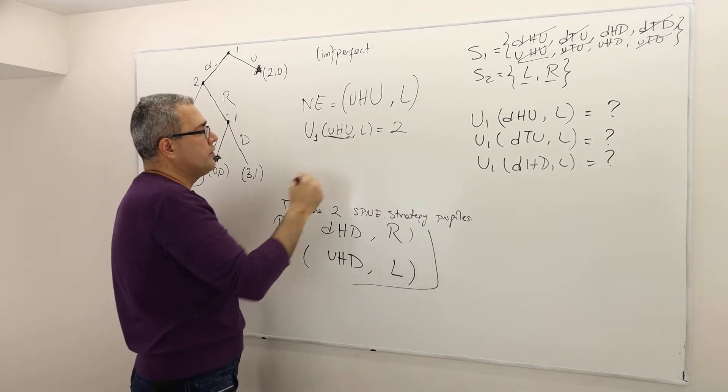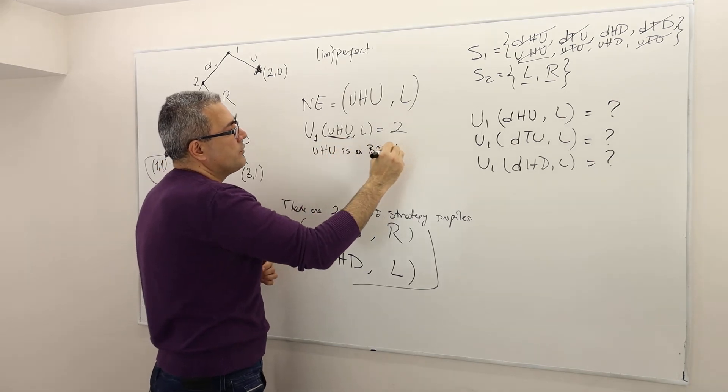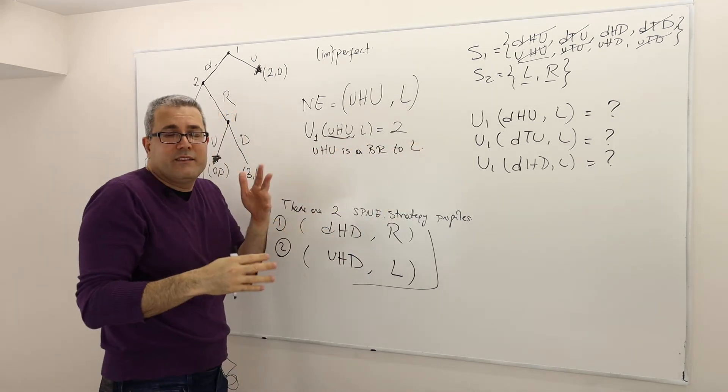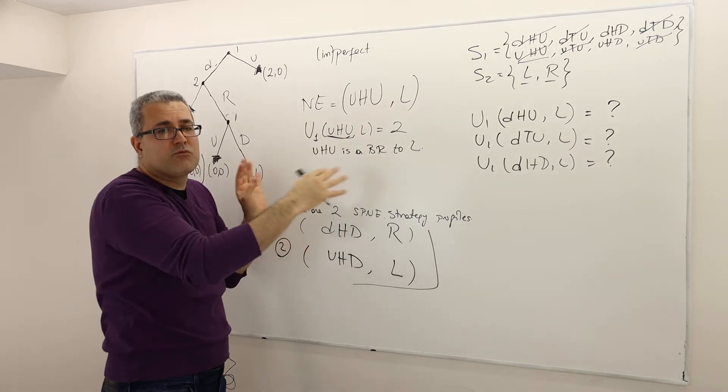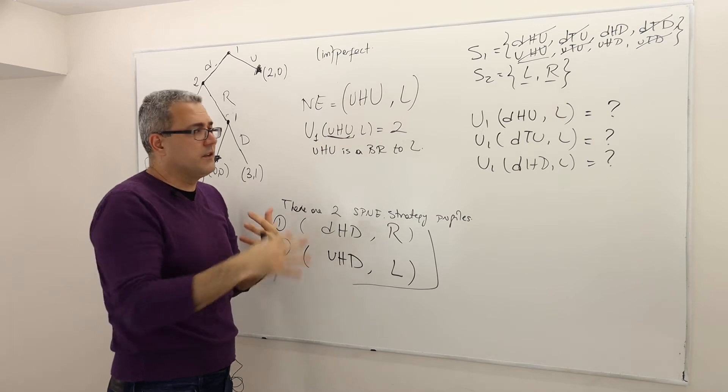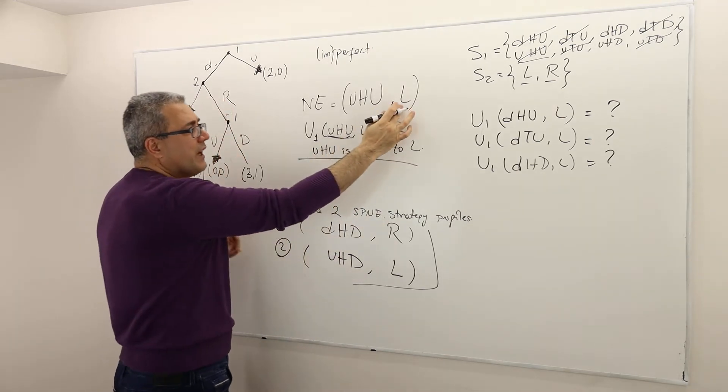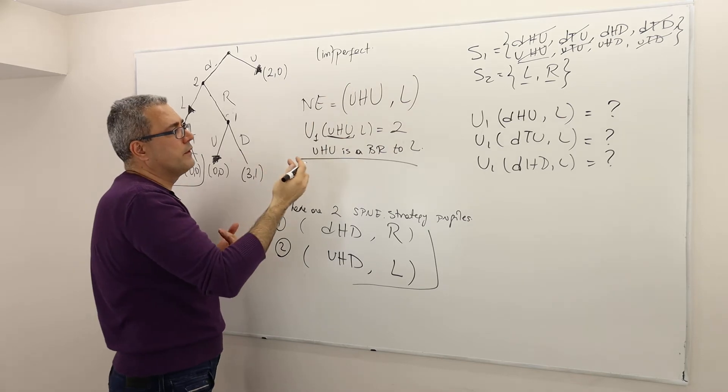Very good. I also need to check UHU is the best response to L. By the way, I did sort of a lot of blah, blah. I didn't write them, but all those explanations are important. Okay? So now I need to check that the second player is also best responding to the first player.